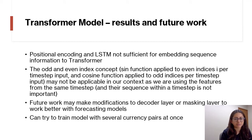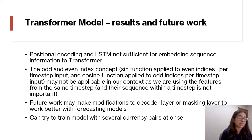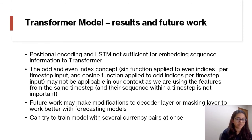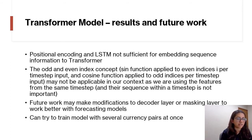The odd and even index concept — where a sine function is applied to even indices and cosine to odd indices per time step — may not be applicable in our context, as we are using features from the same time step and their sequence within the time step is not important. Future work may consider whether transformer architecture is suited for price forecasting tasks in general, or explore modifications such as different decoder or masking layers. Another avenue is training the model on several currency pairs simultaneously so it can generalize across multiple pairs.